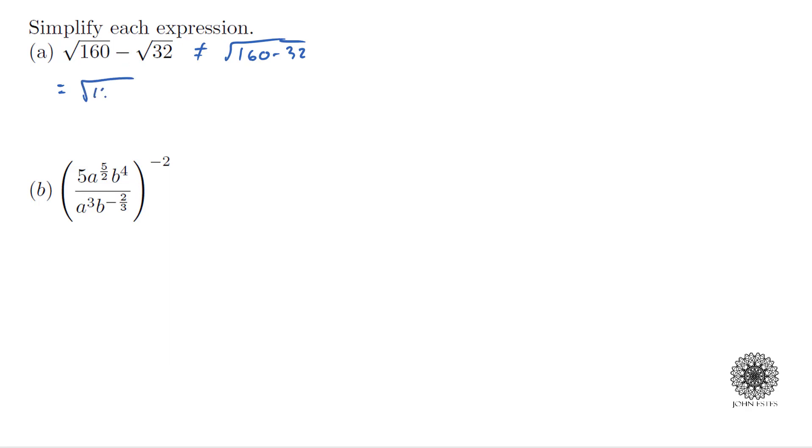So for example, I remember that 160 is 16 times 10, and also 32 is 16 times 2. So what that allows me to do now is I know that the square root of 16 is 4. So in both of these cases I can take out a 4, and I'm left with 4 square root of 10 minus 4 square root of 2.